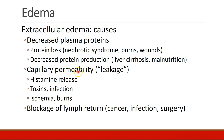It could happen if you have decreased protein production, like in liver cirrhosis or malnutrition. And then other things can cause capillary leakage or permeability, like histamine release, toxins, infections, ischemia, and burns.